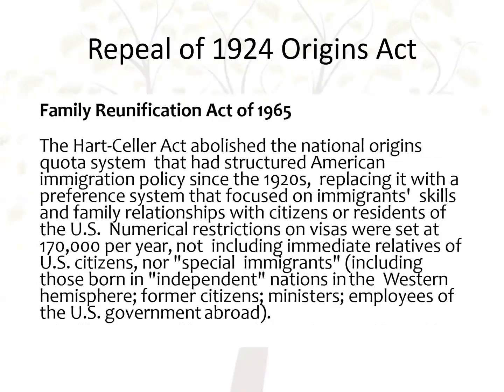The Hart-Celler Act abolished the National Origins Quota system, replacing it with a preference system focused on skills and family relationships. Numerical restrictions on visas were set at 170,000 per year, not including immediate relatives of U.S. citizens or special immigrants such as former citizens, ministers, U.S. government employees abroad, and people seeking asylum. We're still under this Reunification Act of 1965.